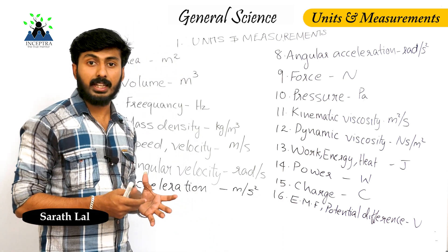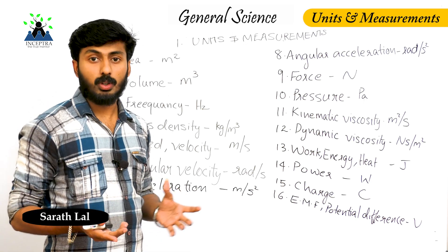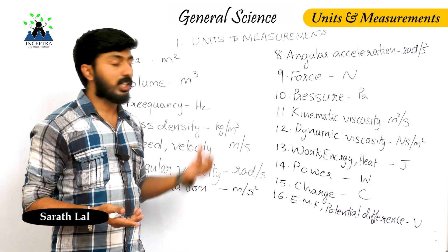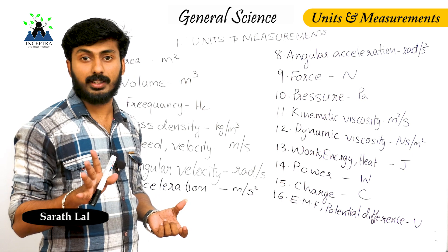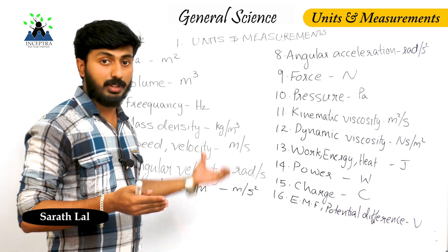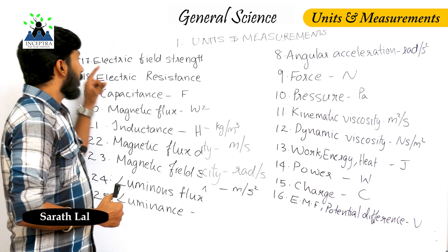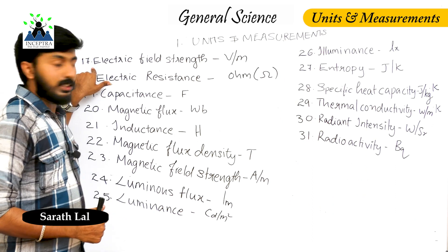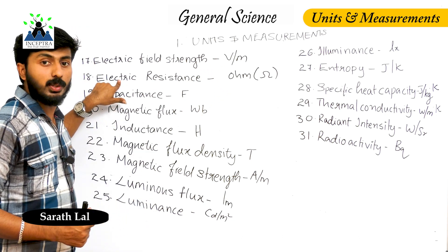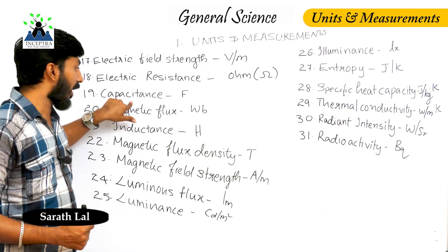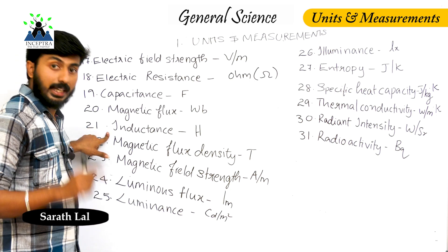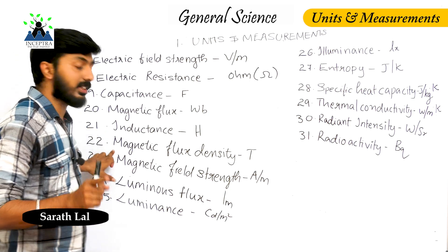Questions are available. Candela is the unit of luminous intensity. Electric field strength unit is volt per meter, electric resistance unit is ohm, capacitance unit is farad, magnetic flux unit is weber, inductance unit is henry, and magnetic flux density unit is tesla.